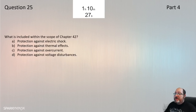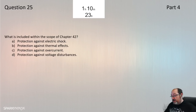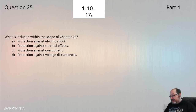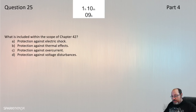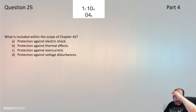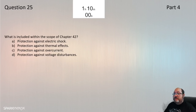Question 25: What is included within the scope of Chapter 42? We've already had a question in Chapter 42 on arc fault detection devices, so we know it. Chapter 42 is simply 'protection against thermal effects.' Question 25 is B.